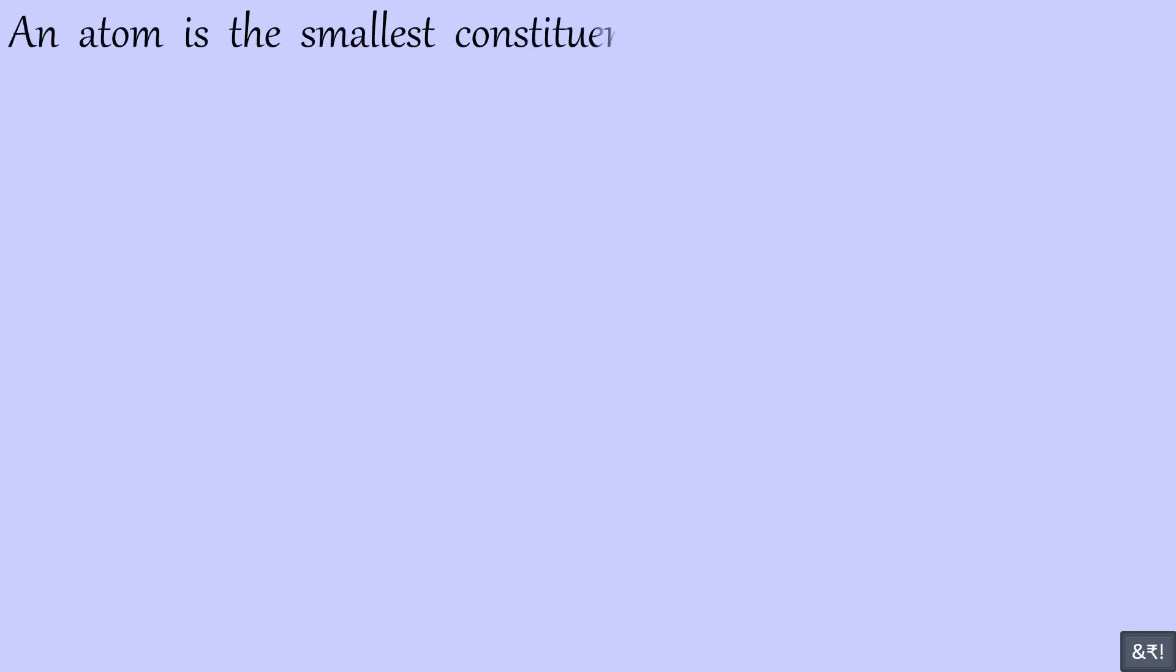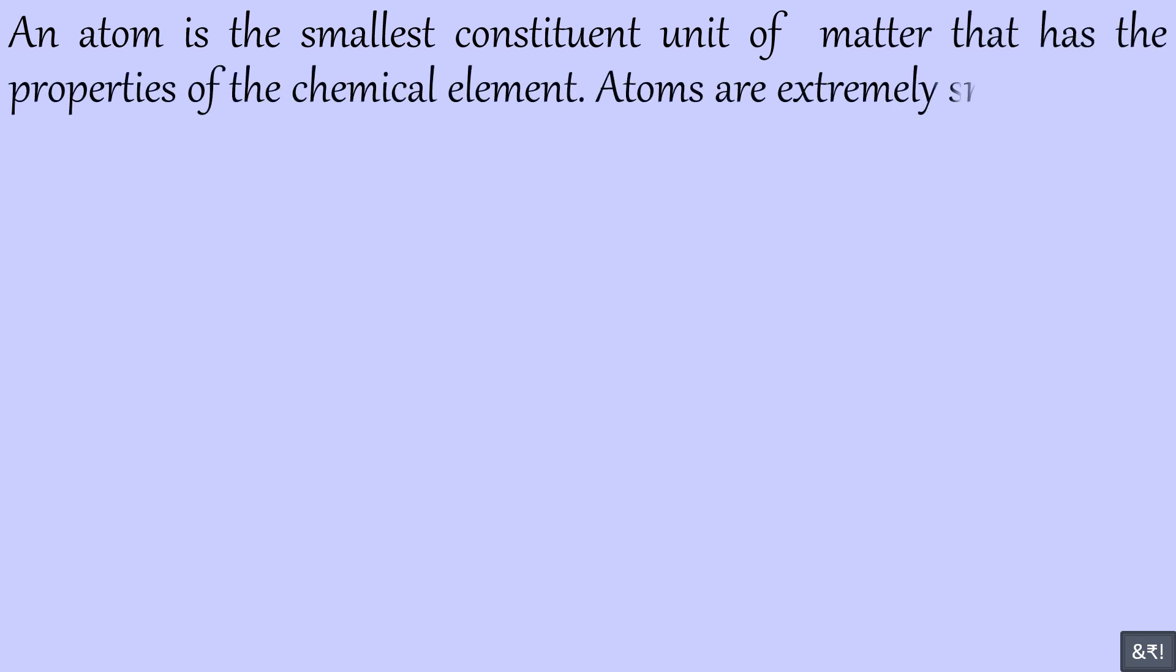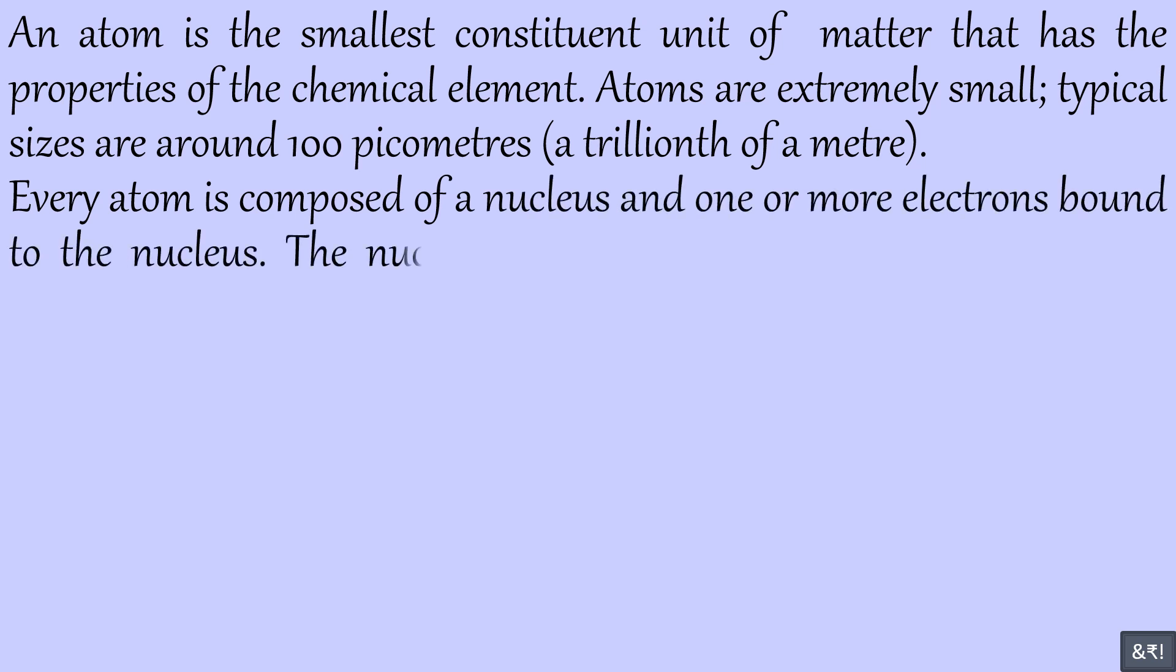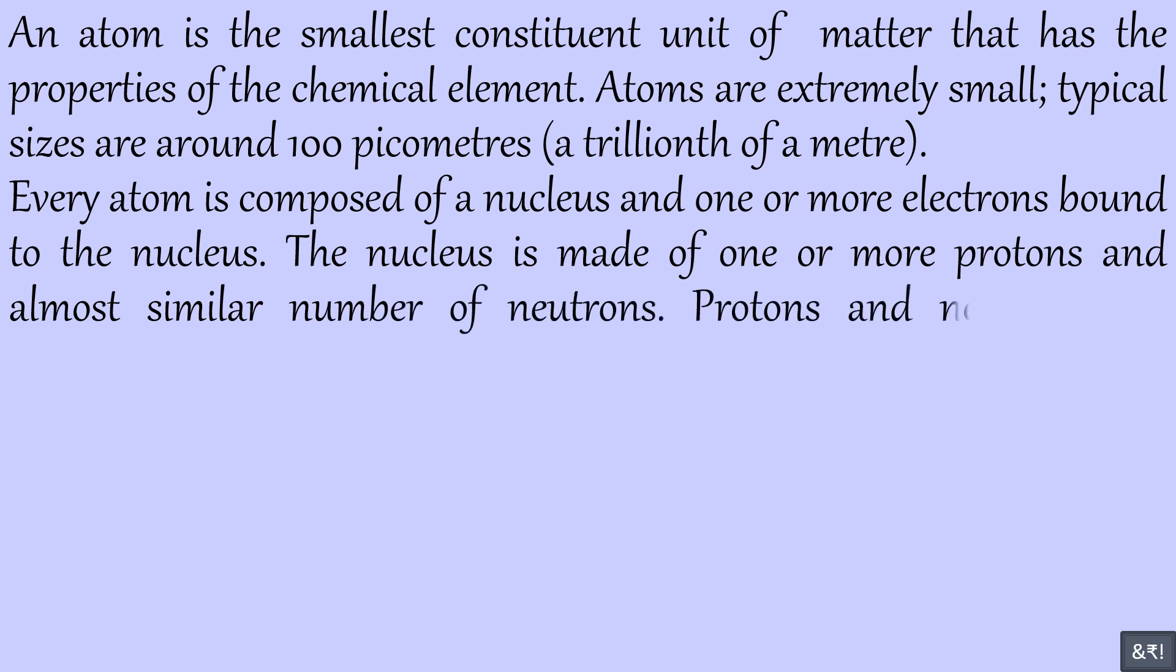An atom is the smallest constituent unit of matter that has the properties of the chemical element. Atoms are extremely small, typical sizes are around 100 picometers. Every atom is composed of a nucleus and one or more electrons bound to the nucleus. The nucleus is made of one or more protons and almost similar number of neutrons. Protons and neutrons are called nucleons.